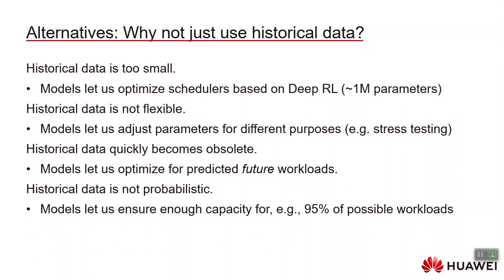Historical data also quickly becomes obsolete. We train our model to generate future periods of time — you may have a flavor that only started being used within the last couple of weeks and isn't even in most of the historical data, but you can make sure it's in the data you train and tune your scheduling systems on. Additionally, historical data is not probabilistic, so it doesn't support decision making under uncertainty. With a model, you can ask: do we have enough capacity for 95% of the possible workloads we'll see next week?